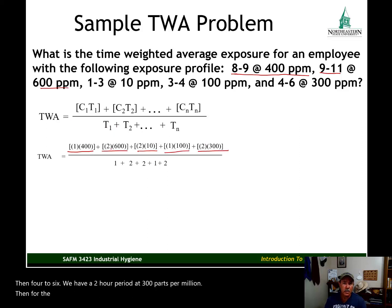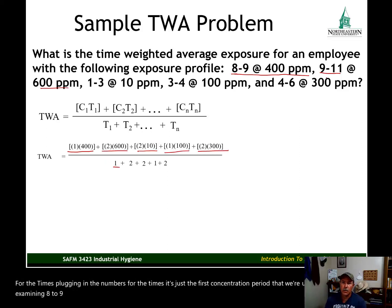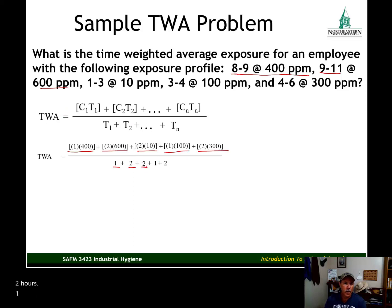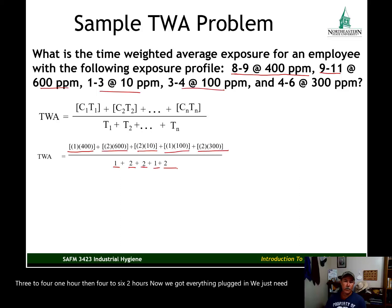For the times in the denominator, it's just the time for each concentration period: 8 to 9 is 1 hour, 9 to 11 is 2 hours, 1 to 3 is 2 hours, 3 to 4 is 1 hour, and 4 to 6 is 2 hours. Now we've got everything plugged in — we just need to pull out our calculator and do the math.